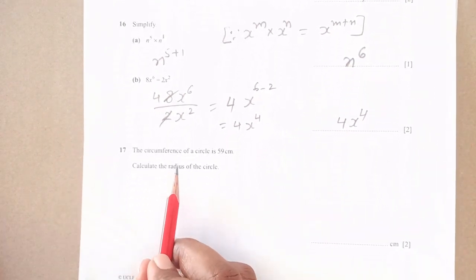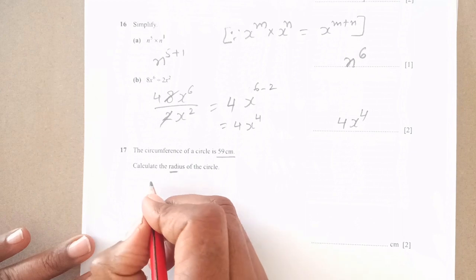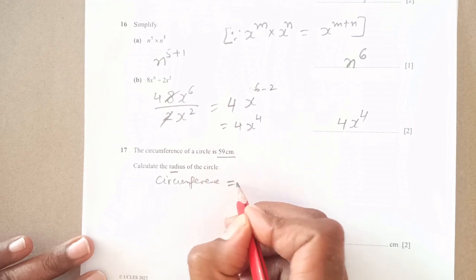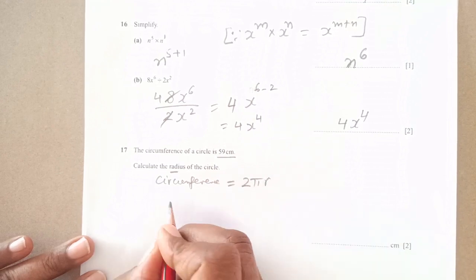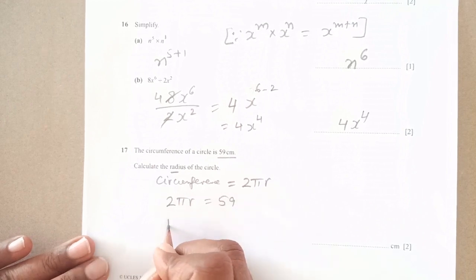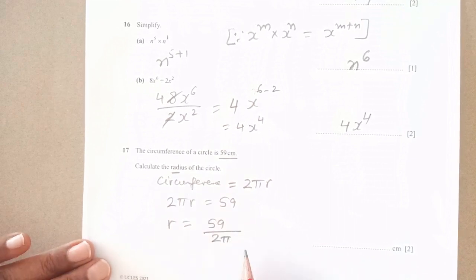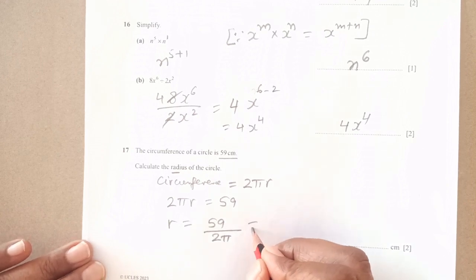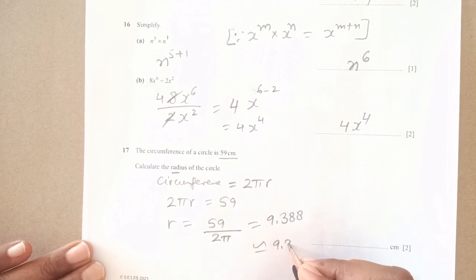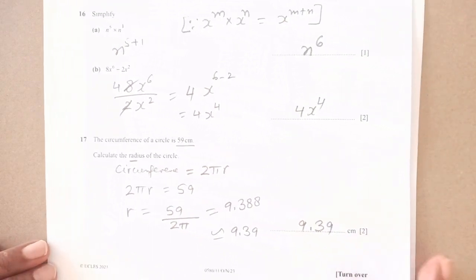Number 17: the circumference of the circle is 59 centimeters, calculate the radius. We know the formula, circumference of the circle is 2πr. So 2πr equals 59, and r is 59 divided by 2π. Once you calculate this with calculator, it comes out to be 9.388, so approximately 9.39 to 3 significant figures. Remember to write your answer to 3 significant figures.